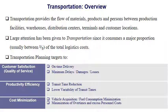The transportation overview shows that transportation provides a flow of material, products, and persons between production facilities, warehouses, distribution centers, terminals, and customer locations. Transportation can consume a major proportion — approximately one-third of the total logistics cost. Therefore, transportation is critical and crucial inside the organization.